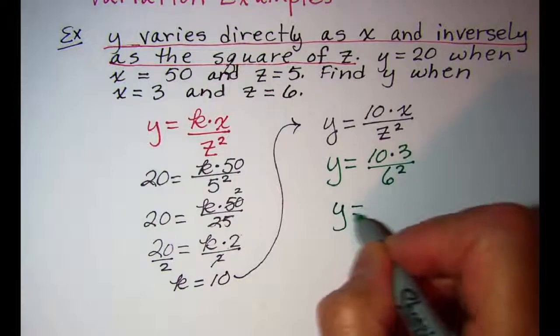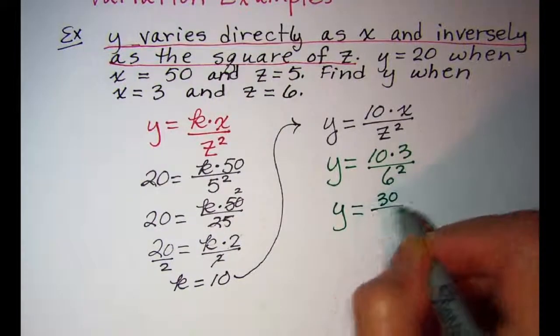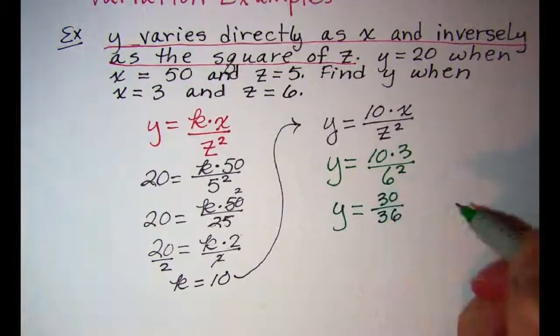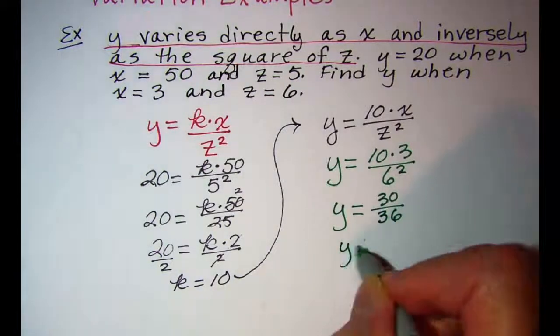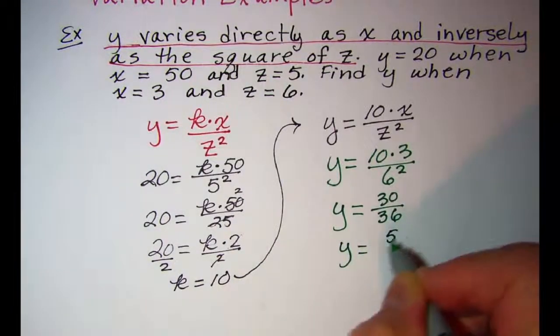y equals 30 over 36 and this fraction simplifies to 5 over 6.